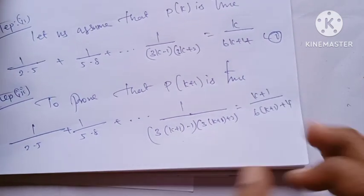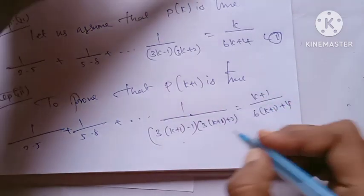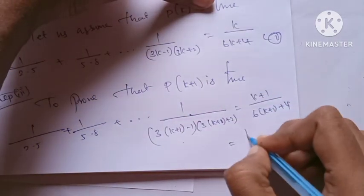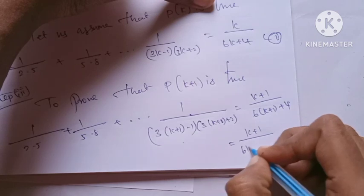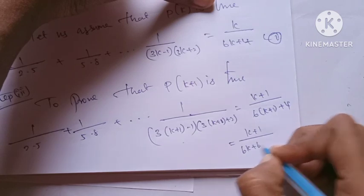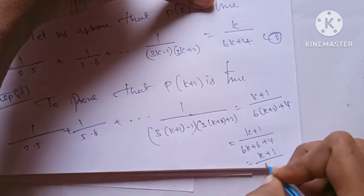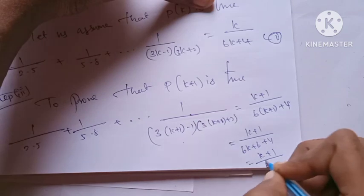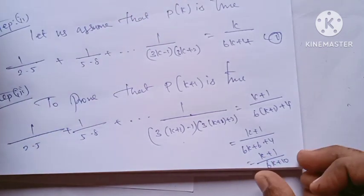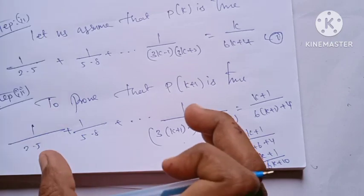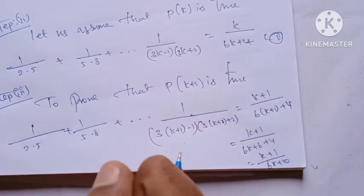If we simplify the right-hand side, we get (k+1)/(6k+6+4), which equals (k+1)/(6k+10). This equals the RHS.